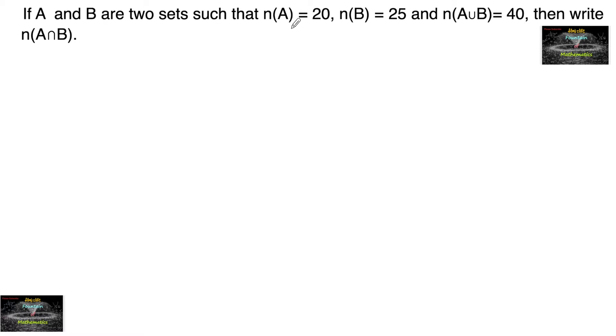If A and B are two sets such that n(A) = 20, n(B) = 25, and n(A∪B) = 40, then write n(A∩B). Since we have a relation between n(A) and n(B) related to union and intersection...